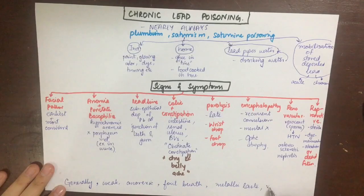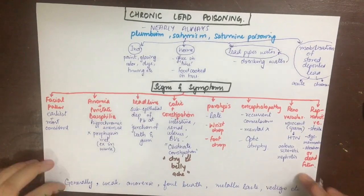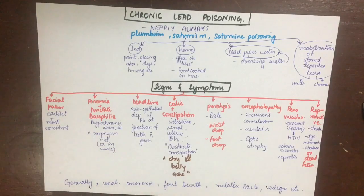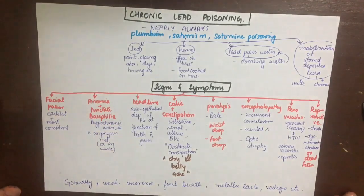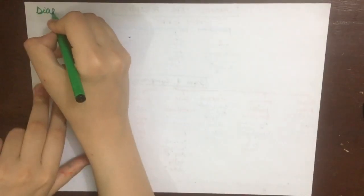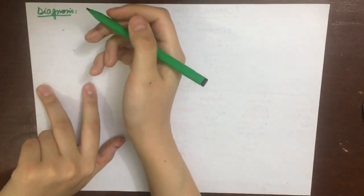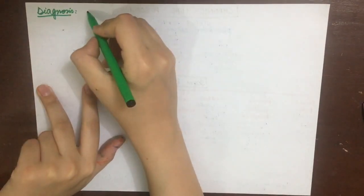The reproductive system in both sexes is also affected, leading to sterility. In females there is dysmenorrhea, amenorrhea, and abortion or dead fetus. The general symptoms will be weakness, anorexia, foul breath, and metallic taste.